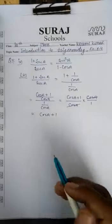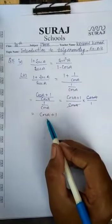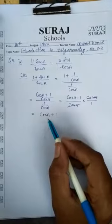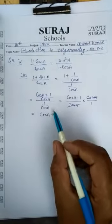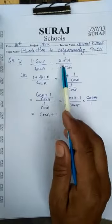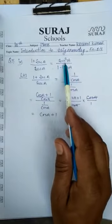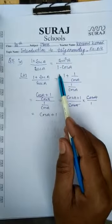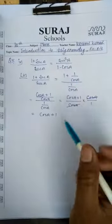In the next step, after arriving here, we have no further procedure to proceed with directly. So we look towards the right hand side, where we have sin square A upon 1 minus cos A.